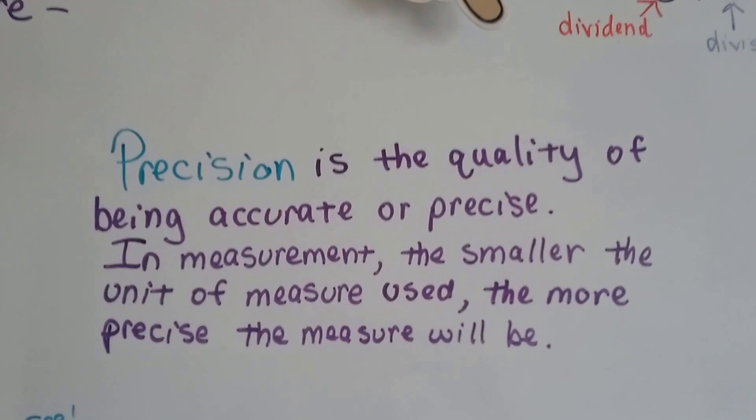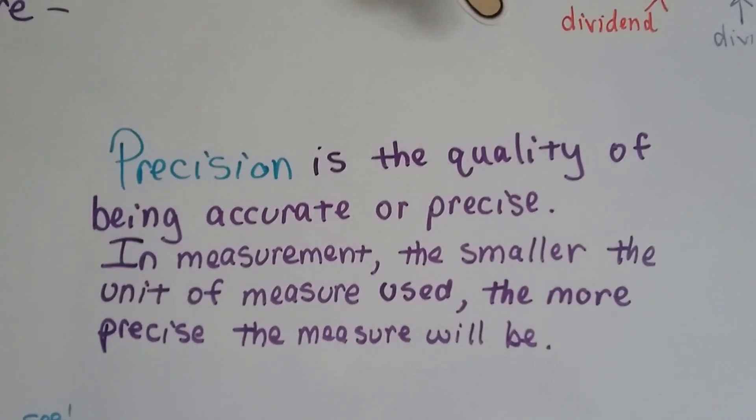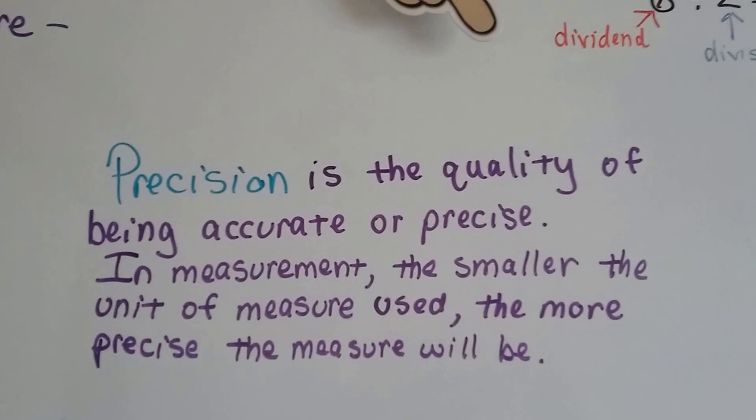Precision is the quality of being accurate or precise in measurement. The smaller the unit of measure used, the more precise the measure will be.